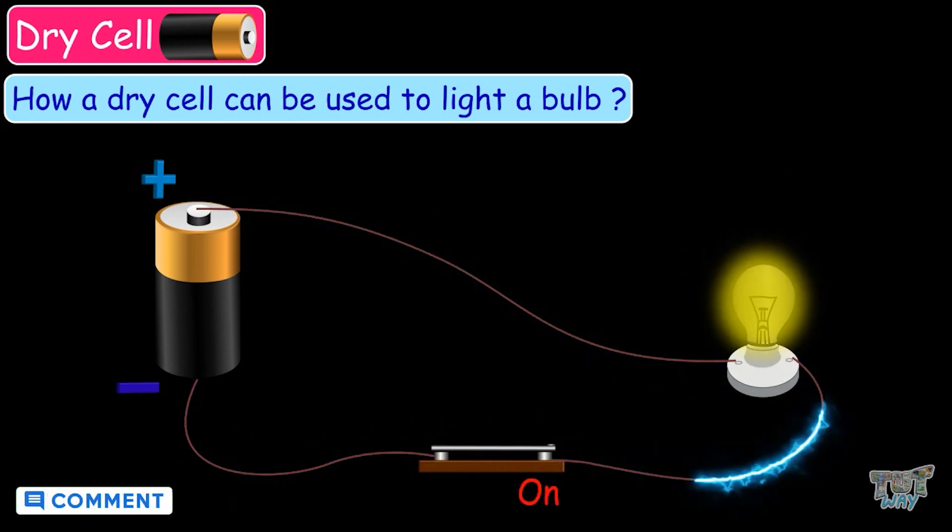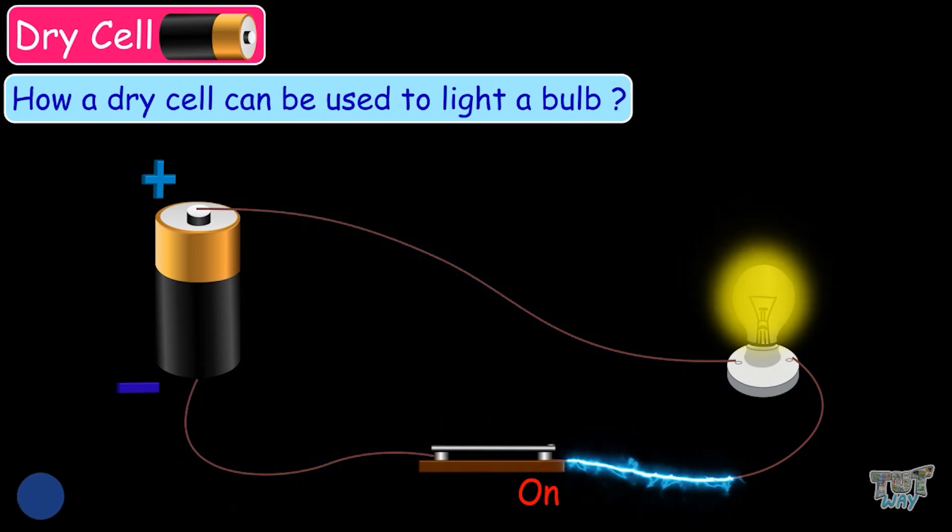When the current flows, the electric bulb starts glowing. So, in this way, we can use a dry cell to light a bulb.